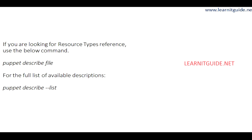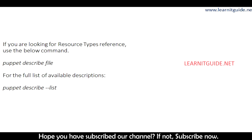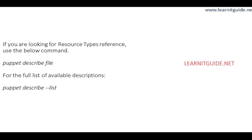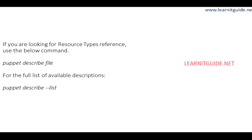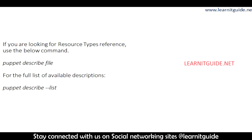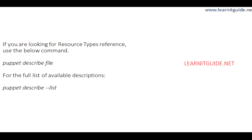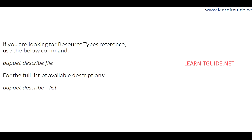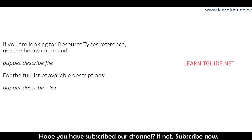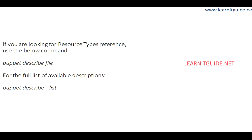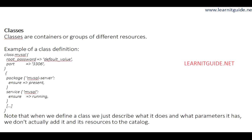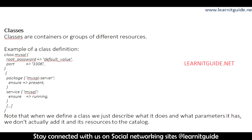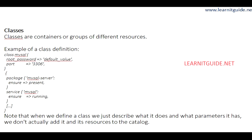To know what resource types and references are available in Puppet, use the command 'puppet describe file' — file being a type — or 'puppet describe package', 'puppet describe service'. To get the full list of available resource type descriptions, execute 'puppet describe --list'.